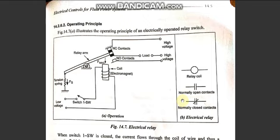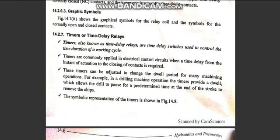We also have timers and time delays, which are used to calculate timing in circuits. Timers are also known as time delay relays, used to control the duration of a working cycle. They are used in many pneumatic circuits where timing is required. For example, if an operation takes 10 seconds, after that time the solenoid valve or relay coil starts to operate.